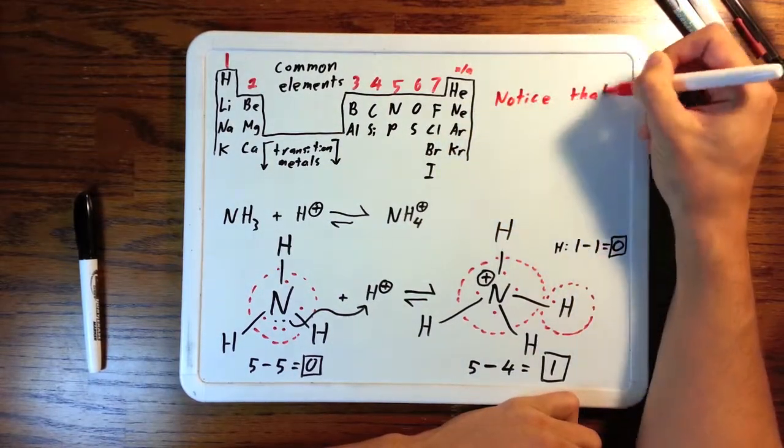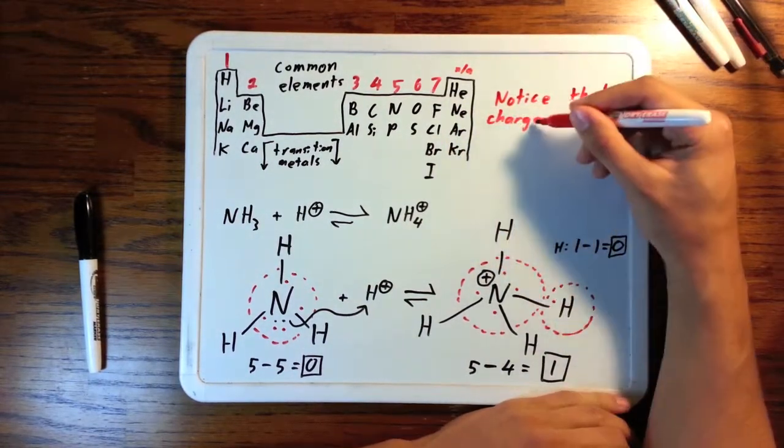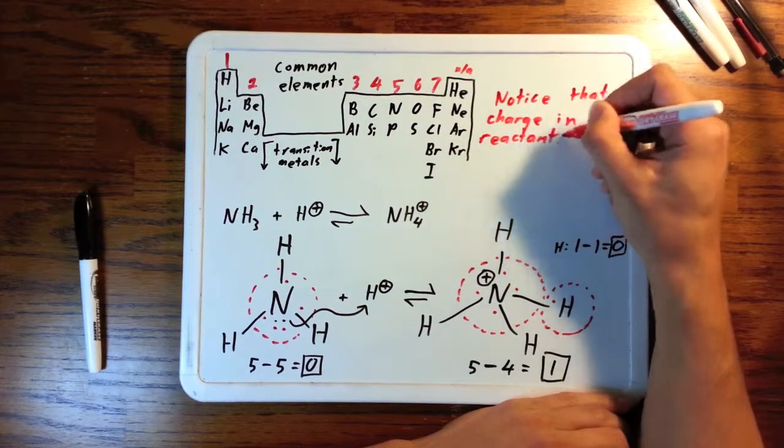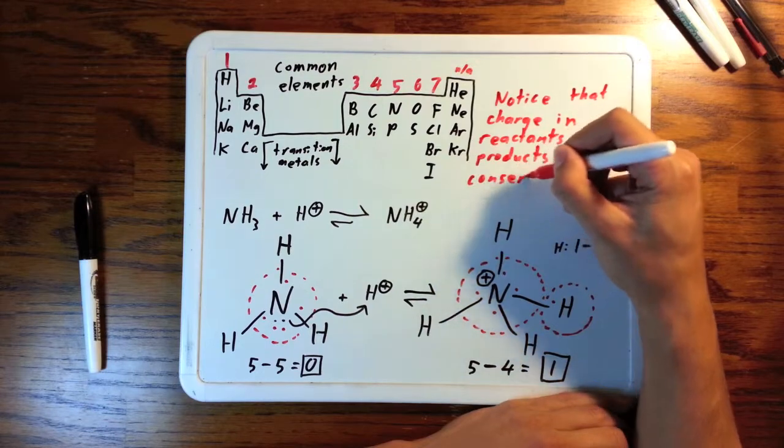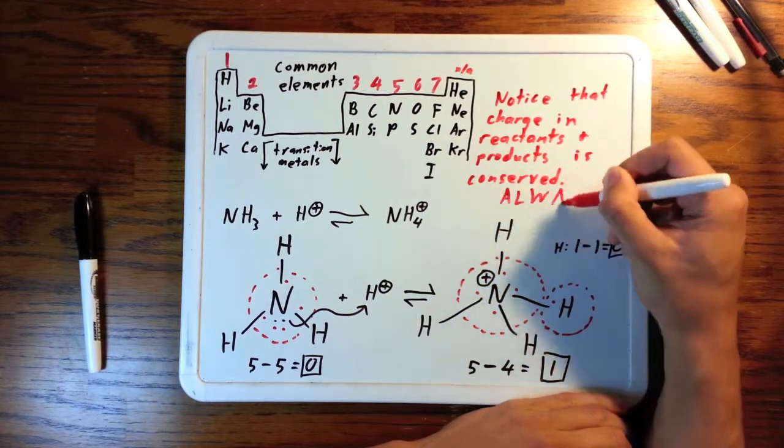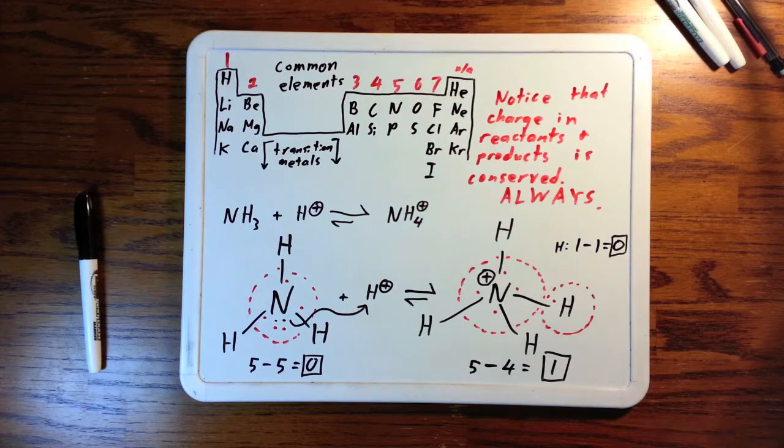This example shows a very important point. Charge is always conserved among reactants and products. Notice with the reactants, there's a neutral molecule and a proton, plus one charge. The product of these two things forming one is plus one.